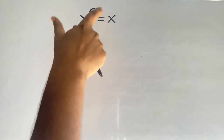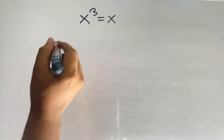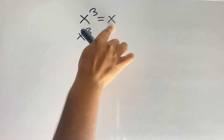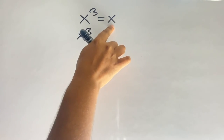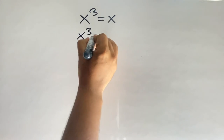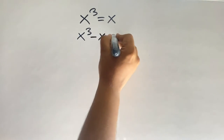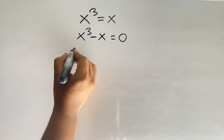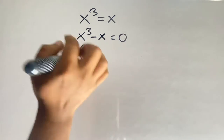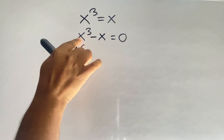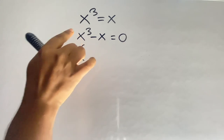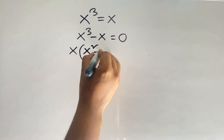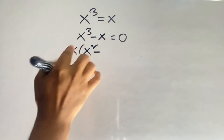How to solve x cubed equals x. First, I move x to the left side, so we get x cubed minus x equals zero. Now x is common, so when I divide x cubed by x we get x squared, and x divided by x is equal to one.